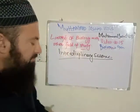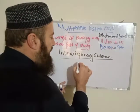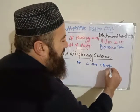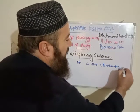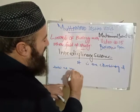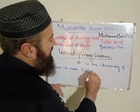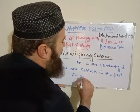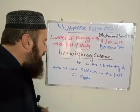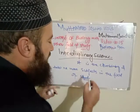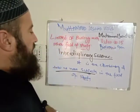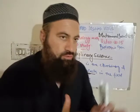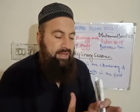The definition of interdisciplinary science: interdisciplinary science means it is the combining of two or more subjects in the field of study. When two or more subjects are combined together in the field of study, this is called interdisciplinary science.